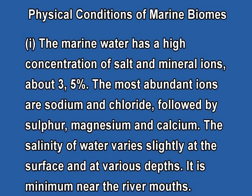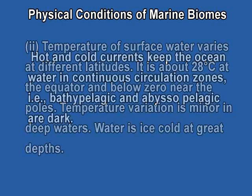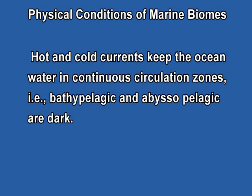The salinity of the water varies slightly at the surface and at various depths. The temperature of the surface water varies at different latitudes — it is about 28 degrees centigrade at the equator and below zero near the poles. The marine habitats are affected by hot and cold currents that keep the ocean water in continuous circulation, maintaining homogeneous salinity conditions.